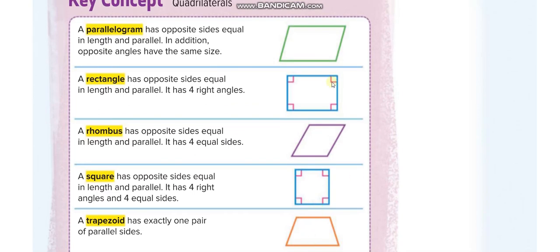Here we have five types of quadrilaterals. The first one is a parallelogram. In a parallelogram, the opposite sides are equal and parallel. In addition, opposite angles have the same size — this angle equals this one, and this angle equals this one.